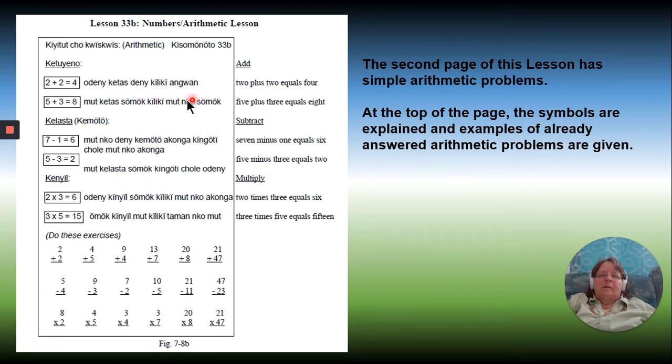At the top of the page, the symbols are explained. This is add, and then we have the symbols 2 plus 2 equals 4. Then we write it out, in this case, it says 2 plus 2 equals 4 in the local language, and 5 plus 3 equals 8.